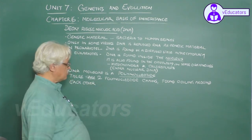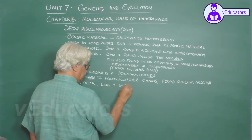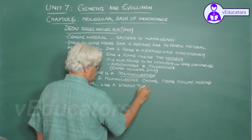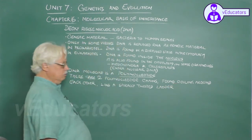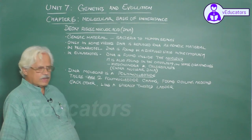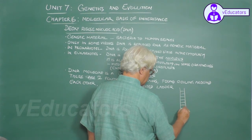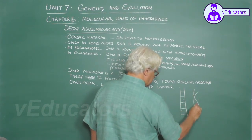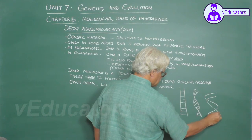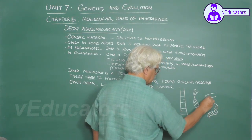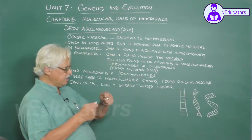You can generalize and say it resembles a spirally twisted ladder. Suppose this is a ladder, twist the ladder, it looks like this. Further twist the ladder, it appears like this. So DNA molecule appears like a spirally twisted ladder.